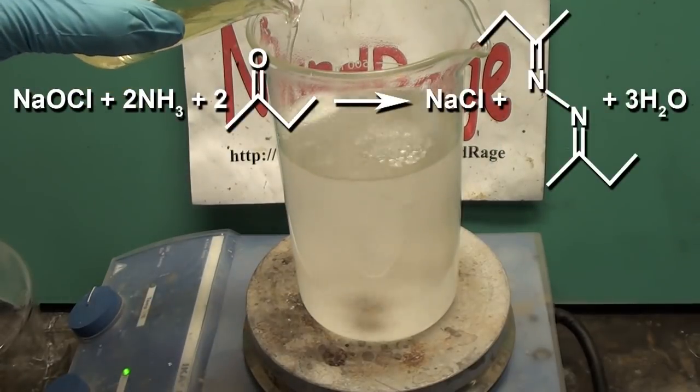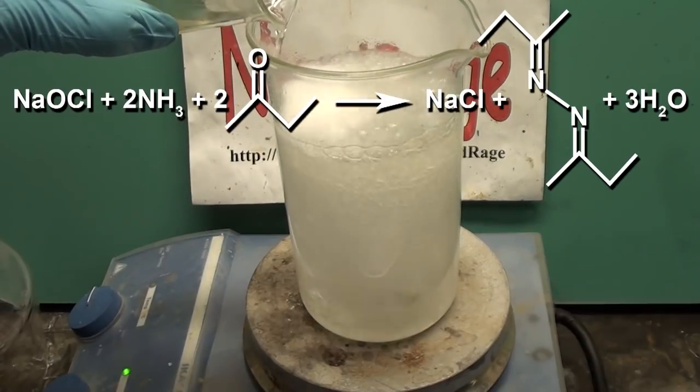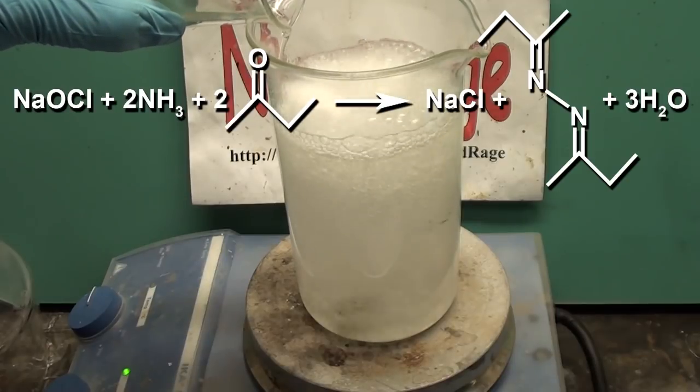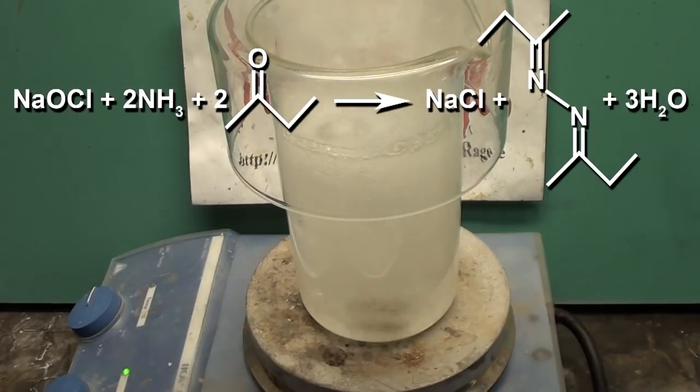What's happening is that sodium hypochlorite bleach is reacting with the ammonia and methyl ethyl ketone to form sodium chloride salt and methyl ethyl ketazine. This actually goes in a multi-step process, but I'm just simplifying it here.